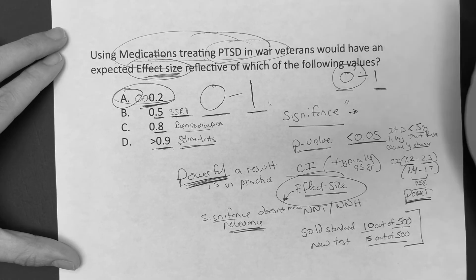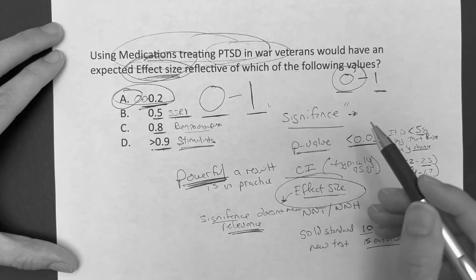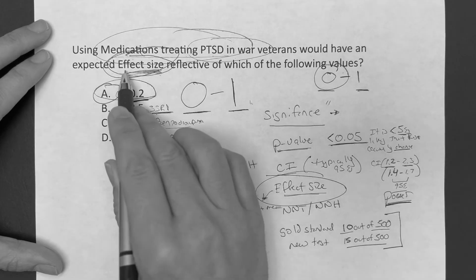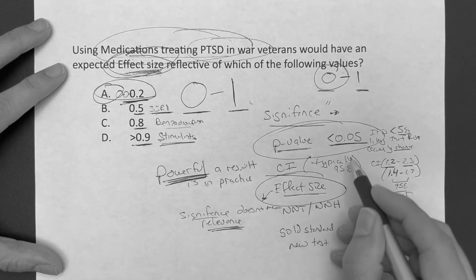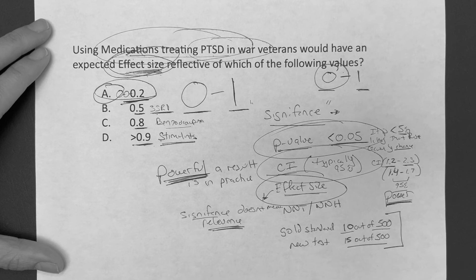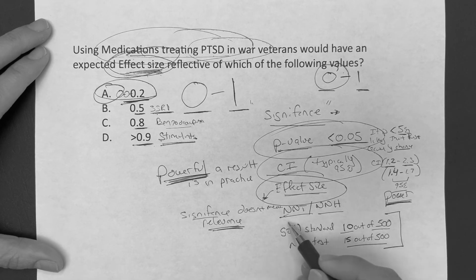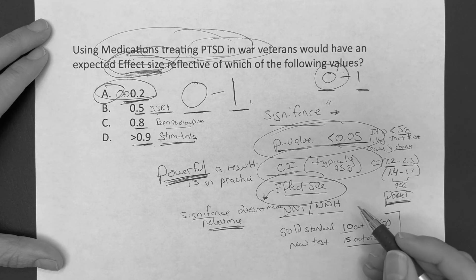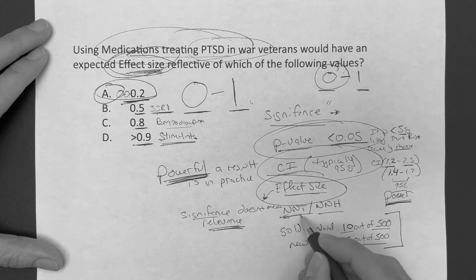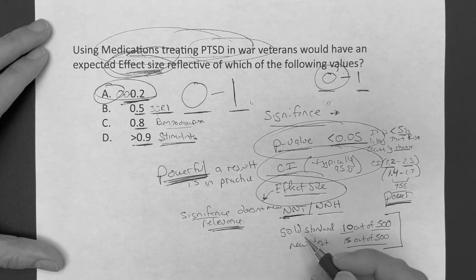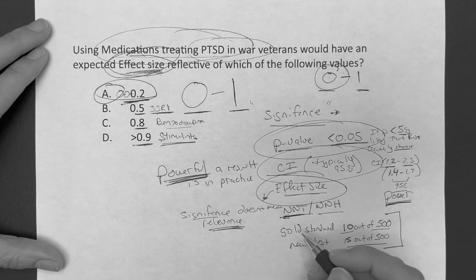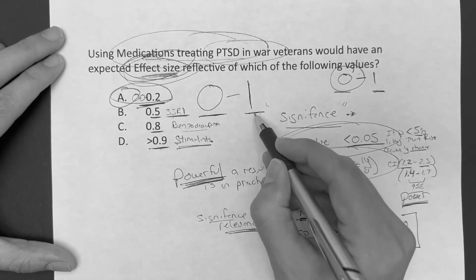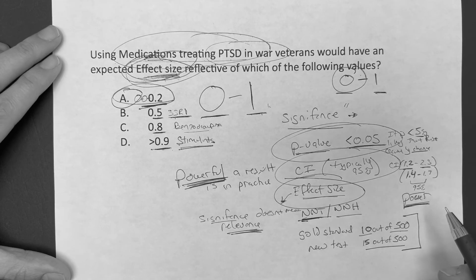So the correct answer is that using medications for PTSD would have an effect size on the lower side. The take-home point: effect size is very important because you can't go on p-value and confidence interval alone. You also need to incorporate number needed to treat and number needed to harm — how many people do I need to treat to see a result in one person? You want that number to be a relatively low number, low single digits. Effect size is between 0 and 1; closer to 1 means greater impact. Be familiar with that for your exam.